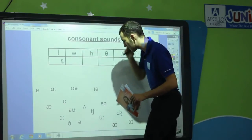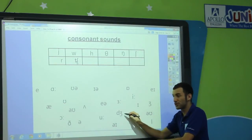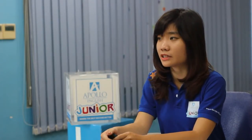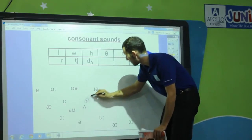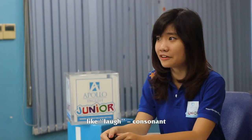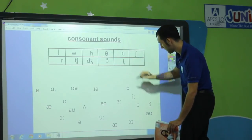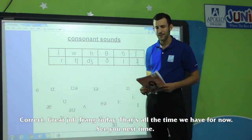R — consonant. C, like in 'watch' — consonant. V, like in 'mother' — yeah. The schwa sound — very good. Z, like in 'knife' — consonant. And J — consonant. Correct. Great job today. And that's all the time we have for now. See you next time.